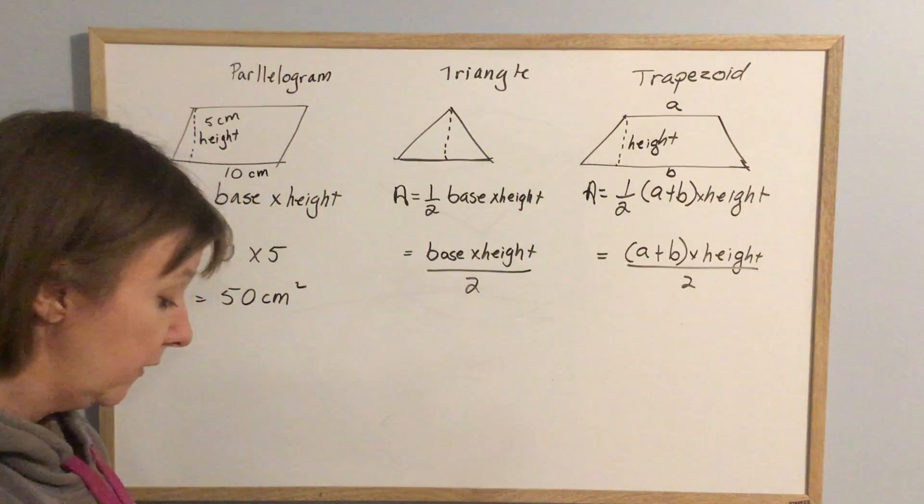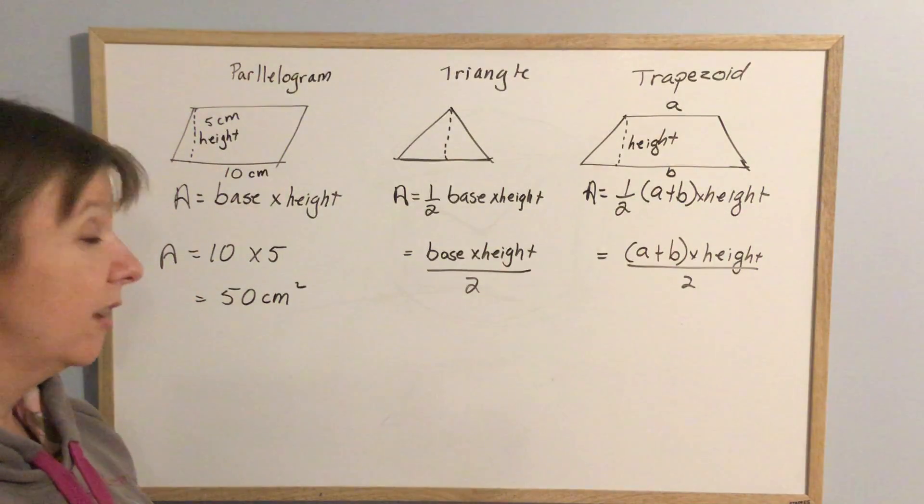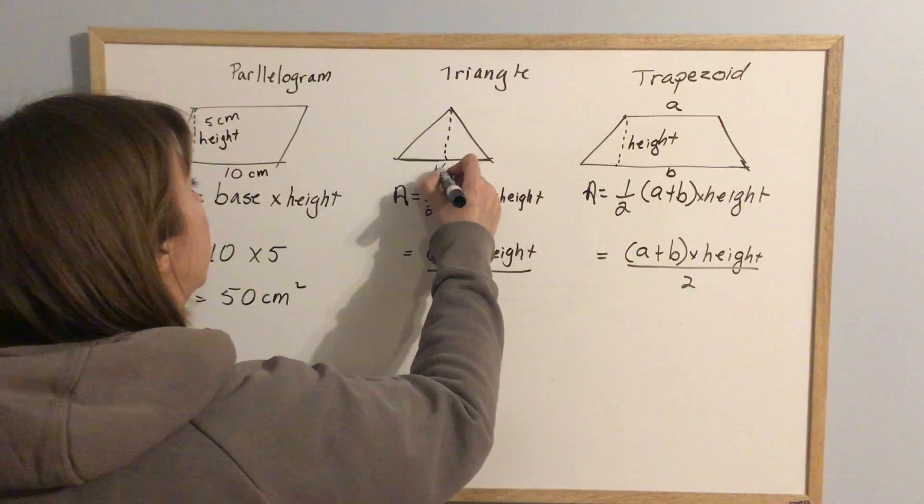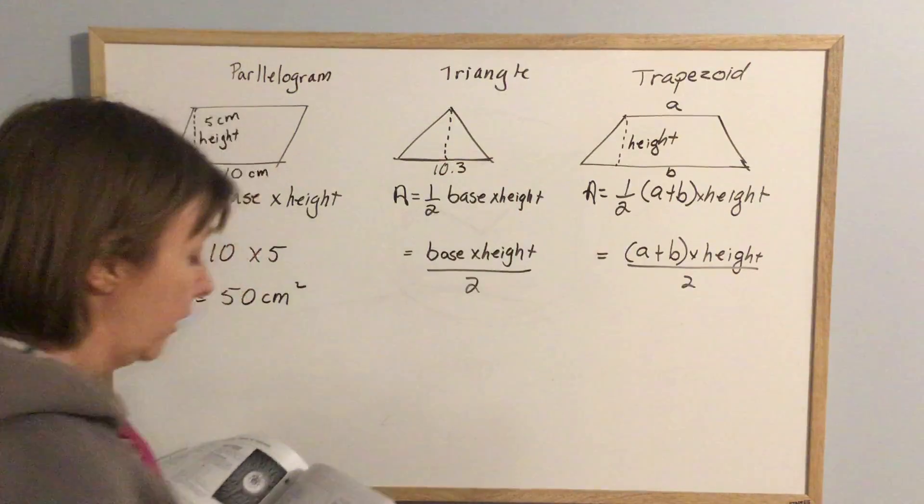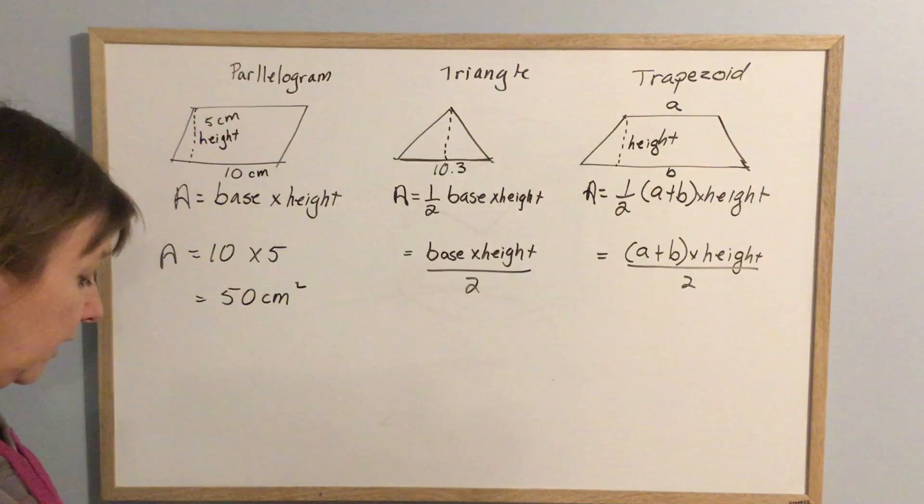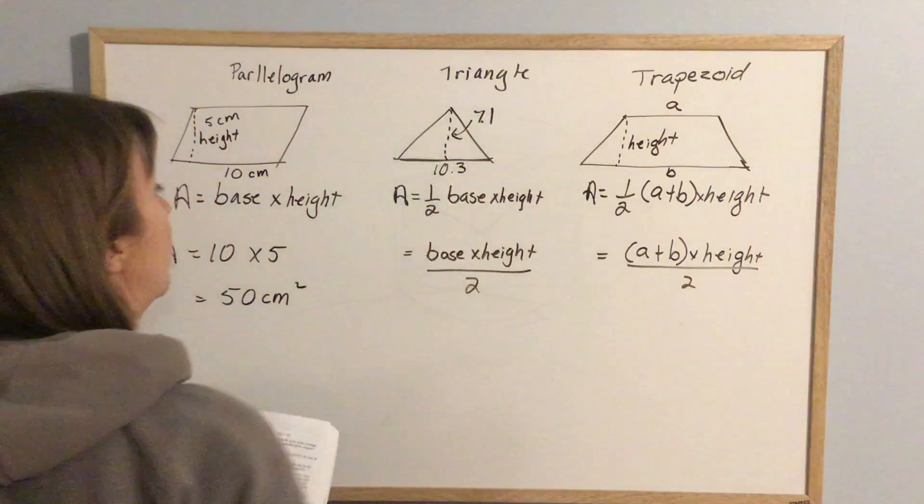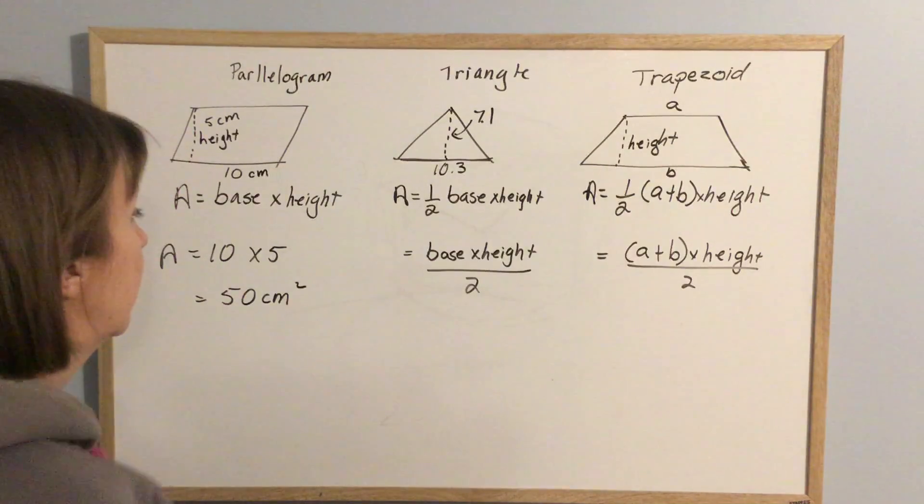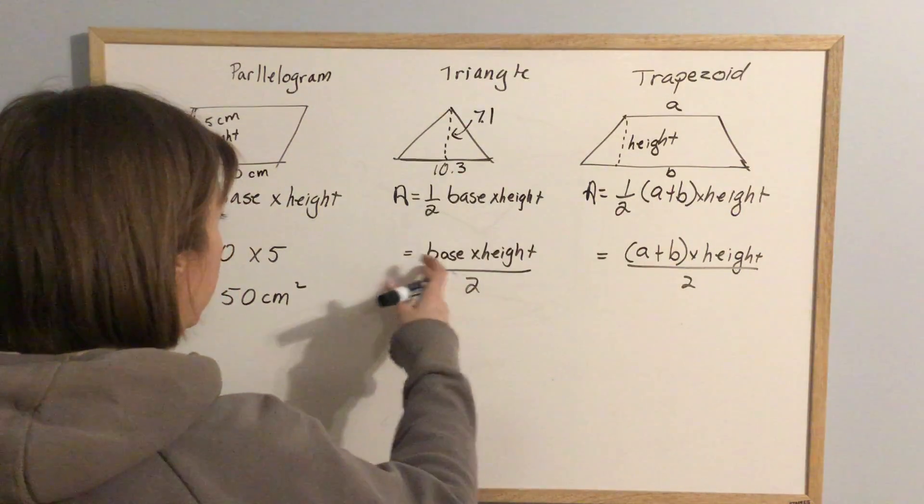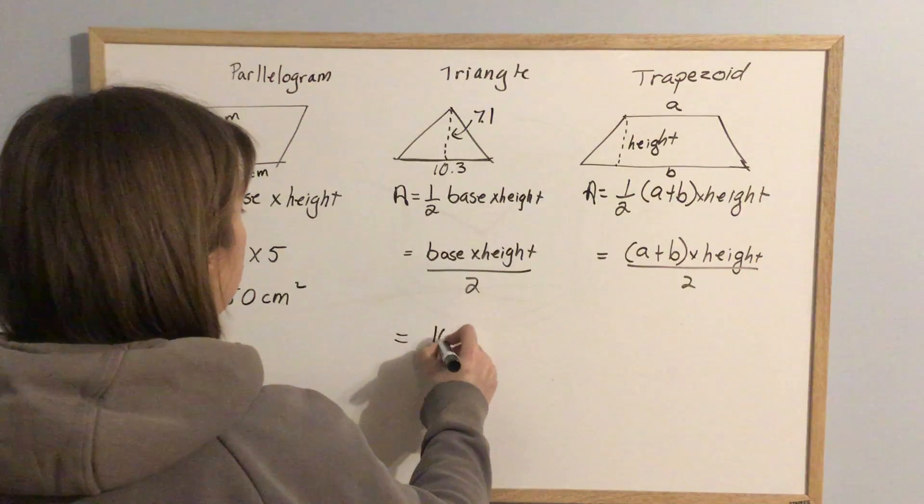Triangle, this one they throw decimals in. It really shouldn't matter. They tell us that the base of this triangle is 10.3. The height of this triangle is 7.1 centimeters. So depending on which you do, doesn't matter. But if I do base multiplied by height...